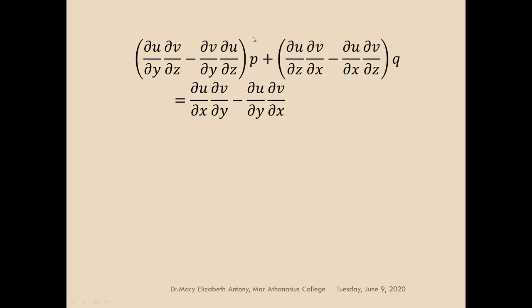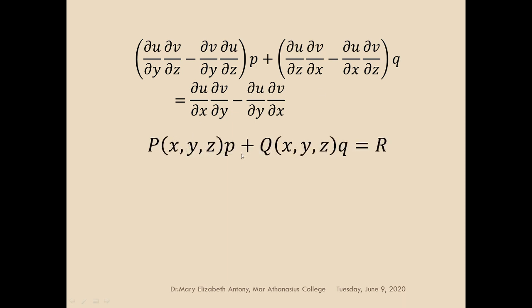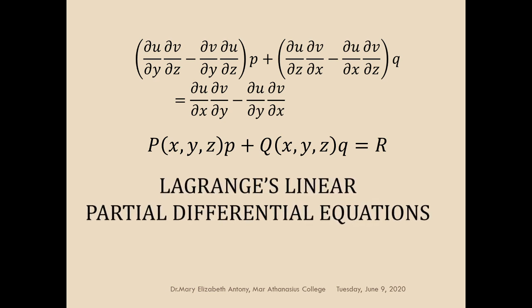The determinant gives us the equation: dou u by dou y into dou v by dou z minus dou v by dou y into dou u by dou z, multiplied by p — where p stands for dou z by dou x — plus similar terms involving q. This can be written as P(x,y,z) into p plus Q(x,y,z) into q equal to R. This equation Pp plus Qq equal to R is very important in partial differential equations and is specifically known as Lagrange's linear partial differential equation.